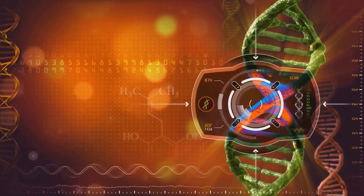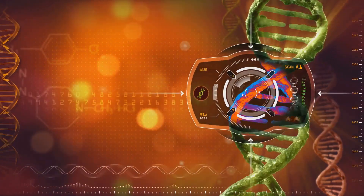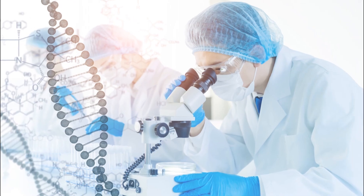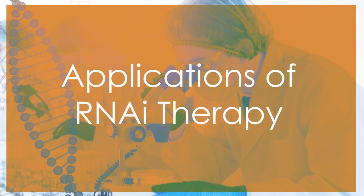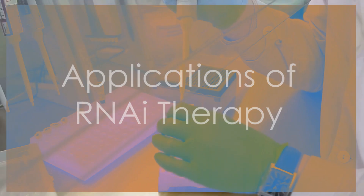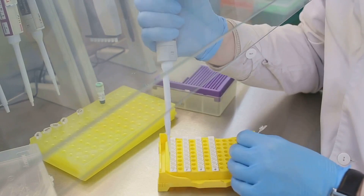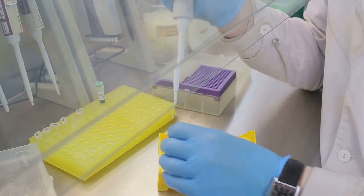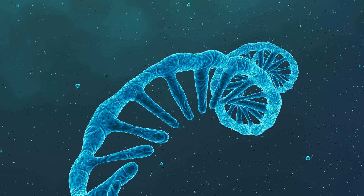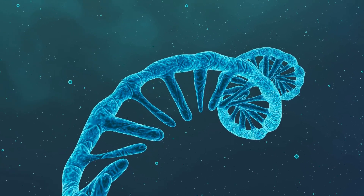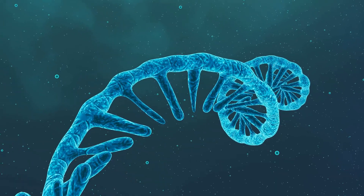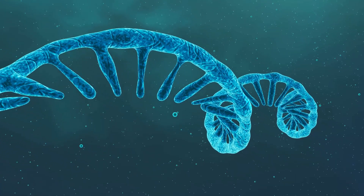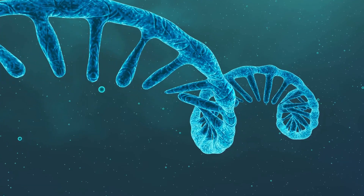This effectively silences the expression of the target gene. RNA interference therapy can be applied in multiple disease areas. For instance, in cancer treatment, siRNA can target and inhibit the expression of oncogenes, thus preventing cancer cell proliferation.